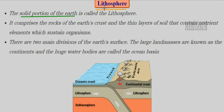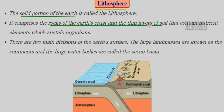What is lithosphere? The solid portion of the earth is known as the lithosphere — that means the land part of the earth. The lithosphere is composed of the rocks of the earth's crust. Inside the earth we have many layers; the crust is made up of rocks and also thin layers of soil. This soil is a habitat for many living organisms, which make the soil nutrient-rich. So lithosphere is comprised of rocks of the earth's crust and layers of soil.